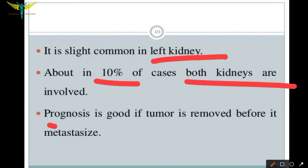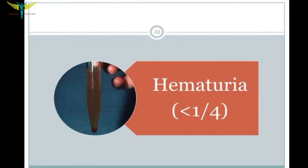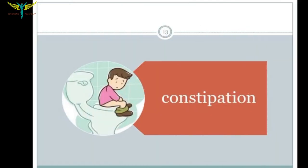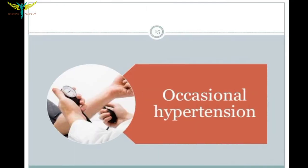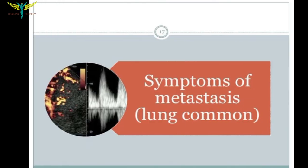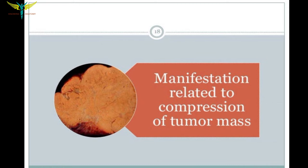The prognosis is good for Wilms' tumor only before metastasis occurs. Clinical features include abdominal swelling or an abdominal mass that is firm, non-tender, and confined to one side, as unilateral involvement is common. Hematuria — blood in the urine — is also present, along with constipation, fatigue, malaise, hypertension, and weight loss. Symptoms of metastasis are more commonly noticed in the lungs, along with manifestations related to compression by the tumor mass and fever in cases of infection.